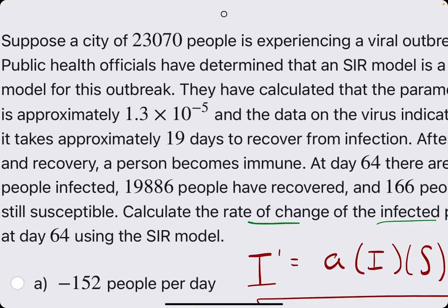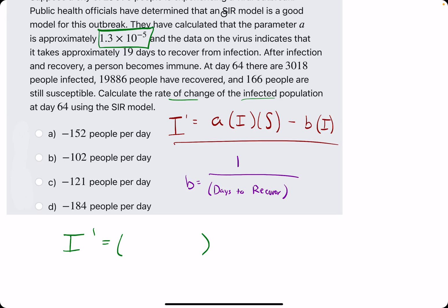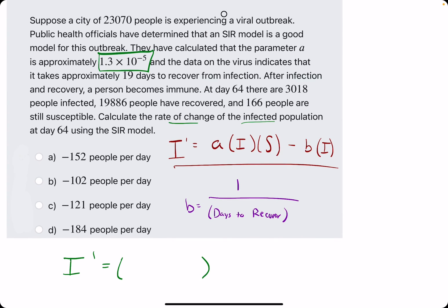So A first is the value that's given here, 1.3 times 10 to the negative 5. You could either plug that directly in when you're calculating, or you can use the decimal, which is what I prefer. We'll do four zeros after the decimal place, and then comes the fifth place, which is the 1, then the 3. So if it's 10 to the negative 5, you'll do four zeros, then the number. If it's 10 to the negative 7, you would do six zeros, and then the number, etc. That's A.